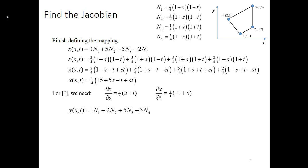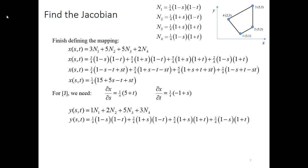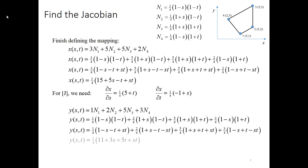Now for Y. Y equals the Y coordinates of each node times their respective shape functions: 1N1 + 2N2 + 5N3 + 3N4, where 1, 2, 5, 3 are the Y coordinates of the four nodes. Plugging in the shape functions, multiplying out the terms, and gathering like terms gives us the expression for Y. For the Jacobian, we take the derivative of Y with respect to S and then with respect to T. These four partial derivative expressions — ∂x/∂S, ∂x/∂T, ∂y/∂S, ∂y/∂T — are the ones that go into the Jacobian.